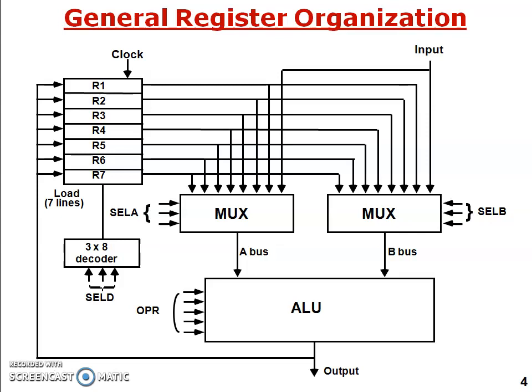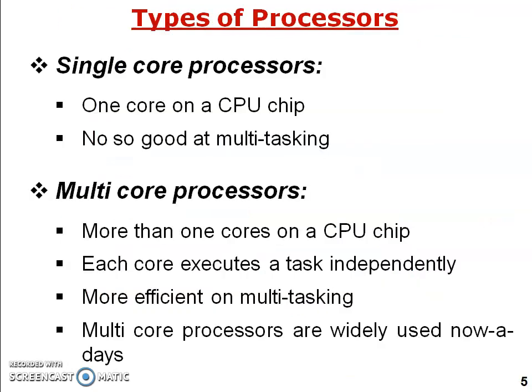The data is passed through the multiplexer, which sends it to the ALU section. Five OPR signals are generated, and one of the five operations will be performed. After the operation is performed, the result will be stored back in the registers or produced as output. This is how the arithmetic and logic unit works.